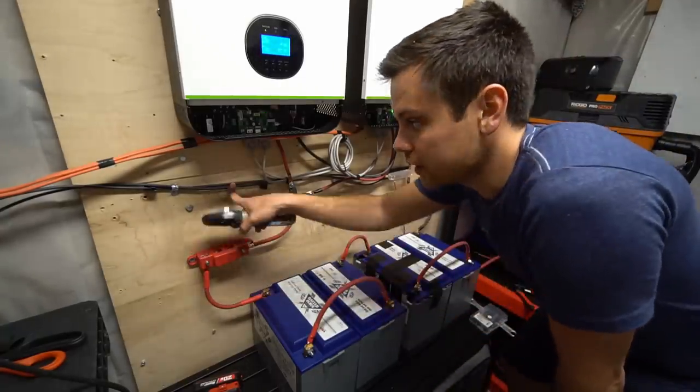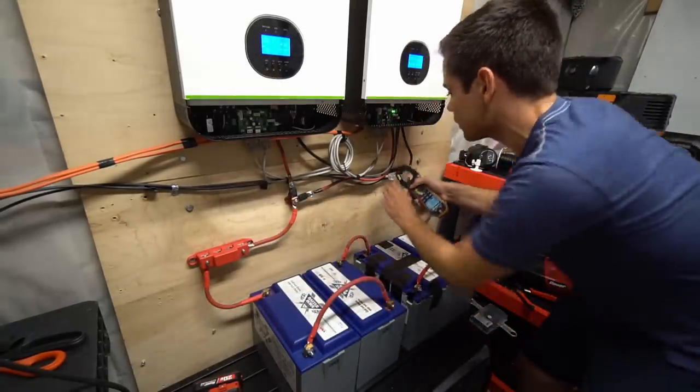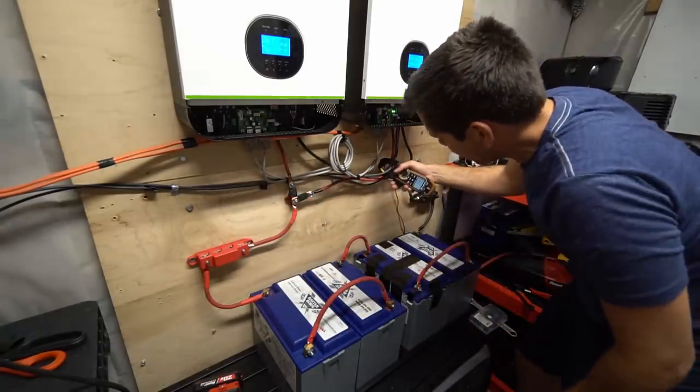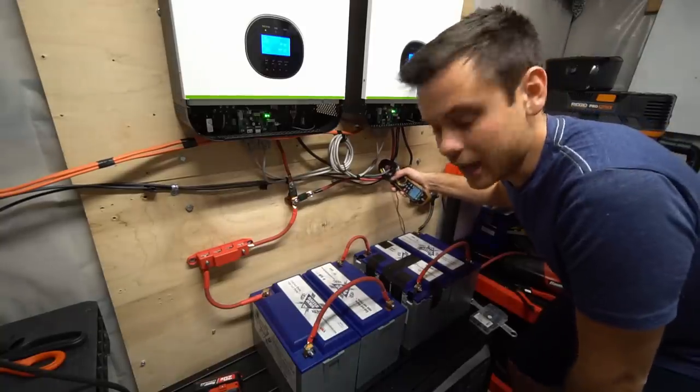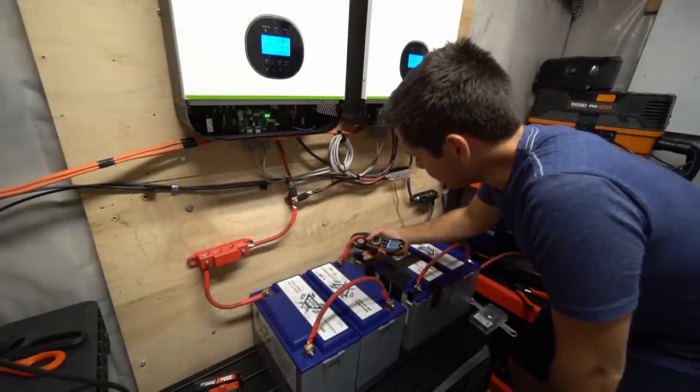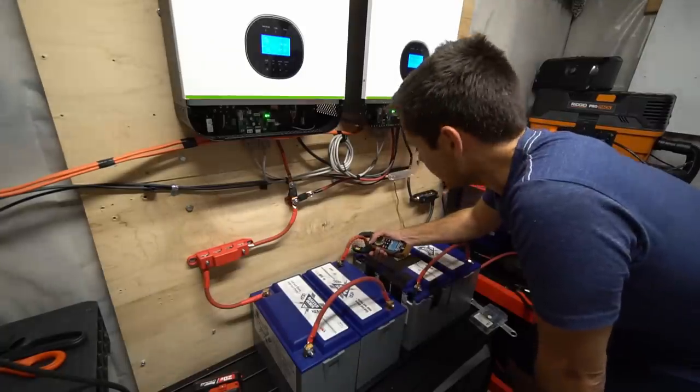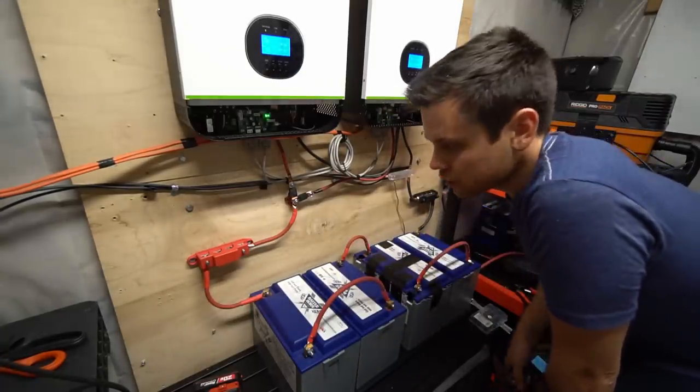Now we need to check if there's actually current in the solar input wires and the batteries. So at the batteries we have a higher voltage and it's at 2.9 amps. And at the batteries we have 2.4 amps going in. So yeah, everything is charging in properly.